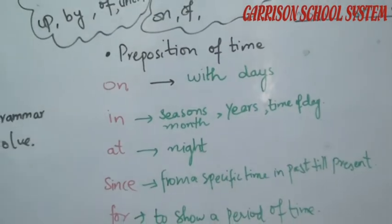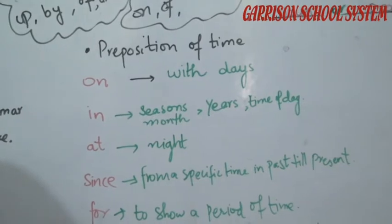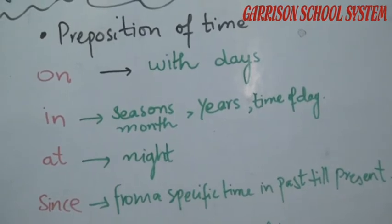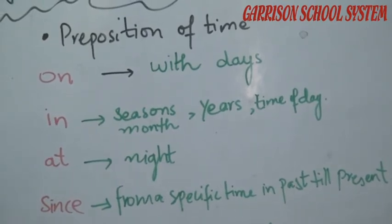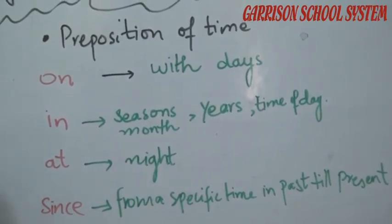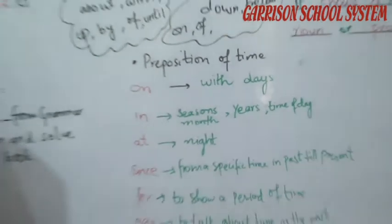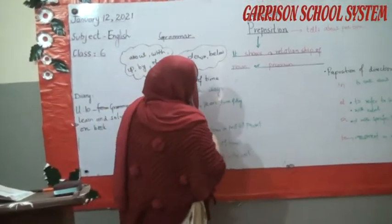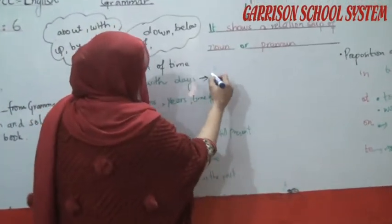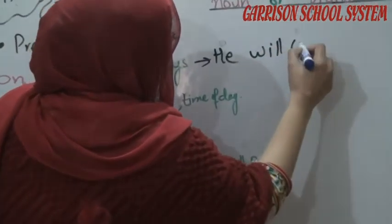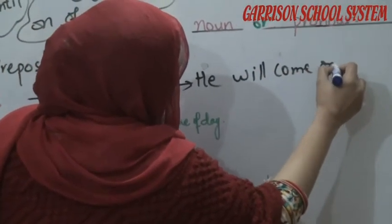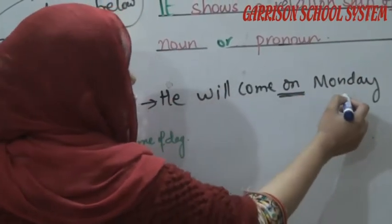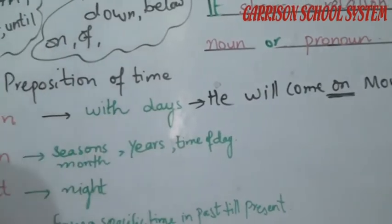We use prepositions for days. For example: 'He will come on Monday.' 'We have a library period on Monday.' 'He will go to school on Tuesday.' So basically, for time we use 'on' — for example, 'He will come on Monday.' Here 'on' is the preposition and 'Monday' shows we use it for days.